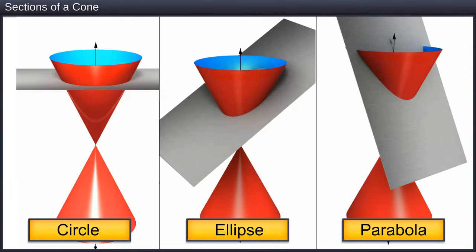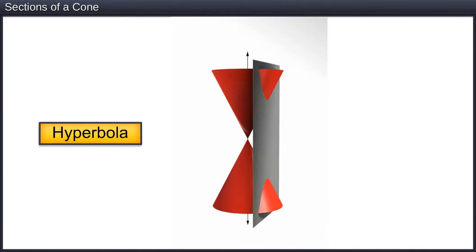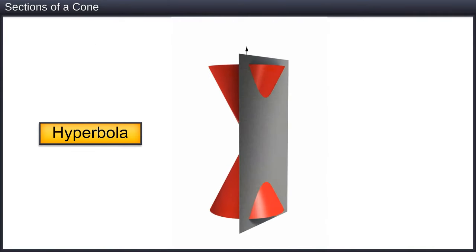Observe that in the formation of conic sections in the form of a circle, ellipse or parabola, the plane intersects only one nappe of the cone. However, in the formation of a conic section in the form of a hyperbola, the plane intersects both the nappes of the cone. Also note that in the formation of these conic sections, the intersecting plane does not pass through the vertex of the cone.